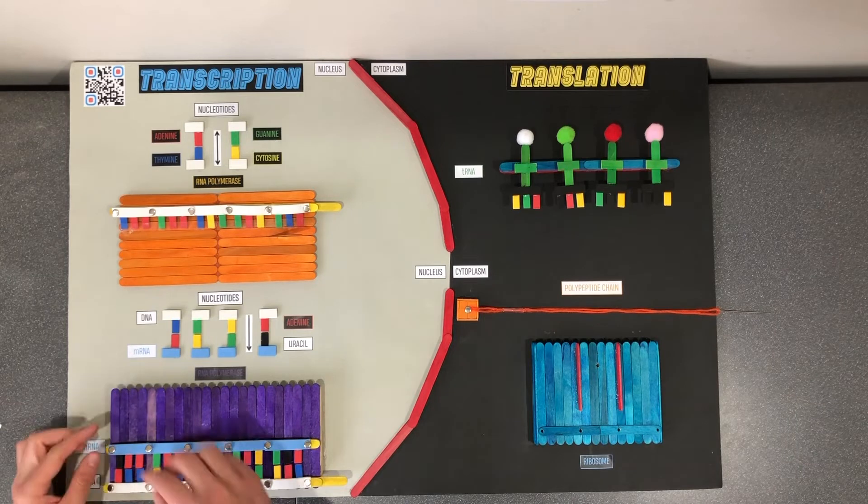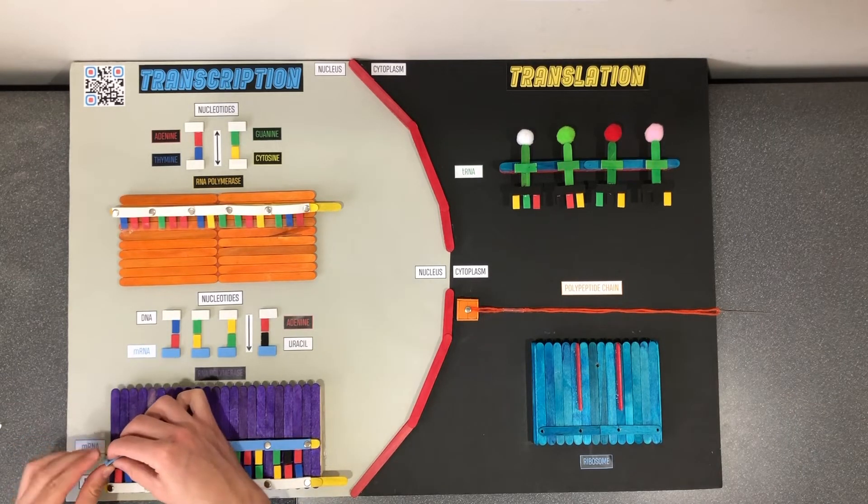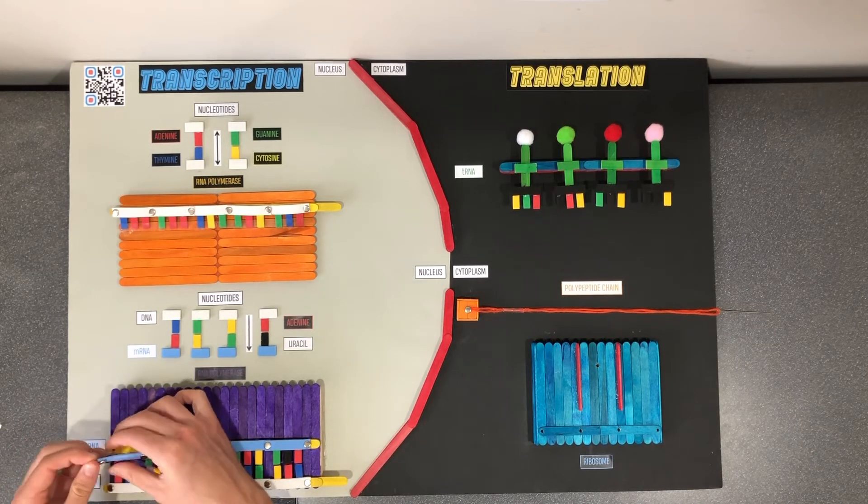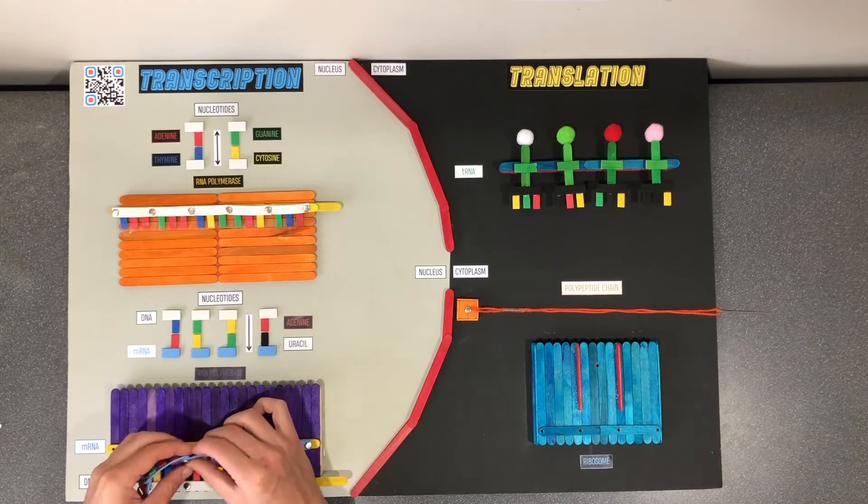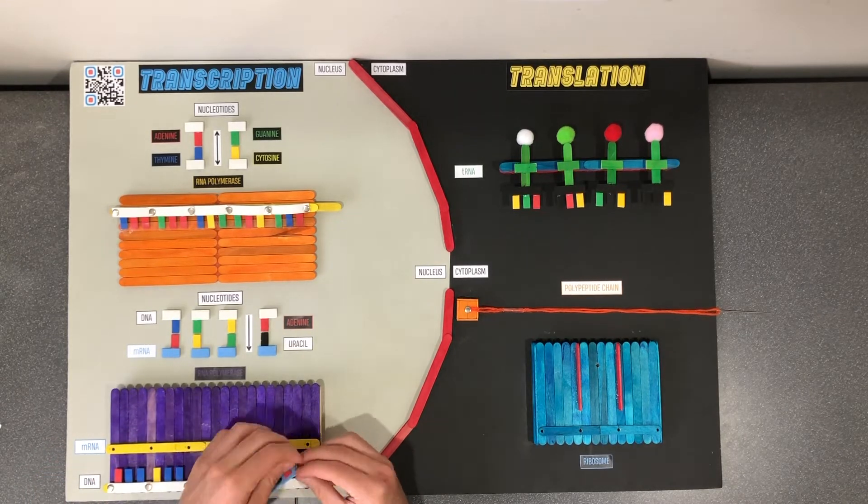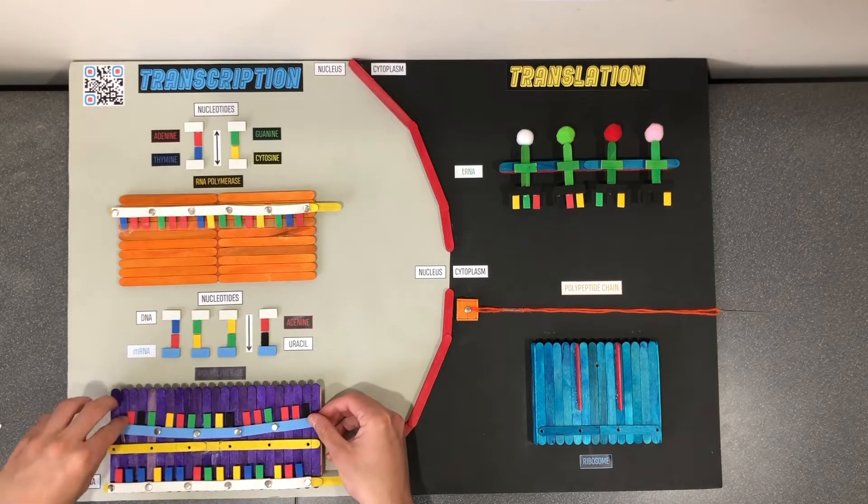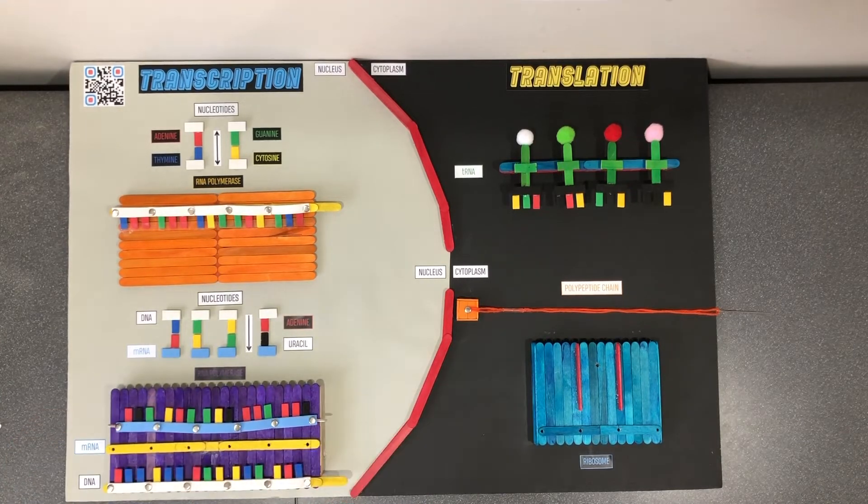Users will fold the fastener pins down to create a secure and movable mRNA strand. It is important to note that after the mRNA has been transcribed, it undergoes splicing, whereby non-coding segments of the DNA, called introns, are removed.